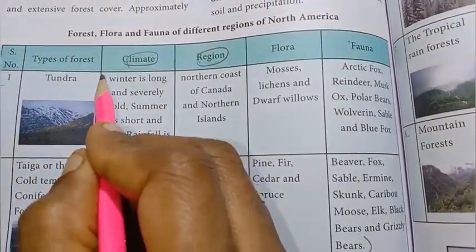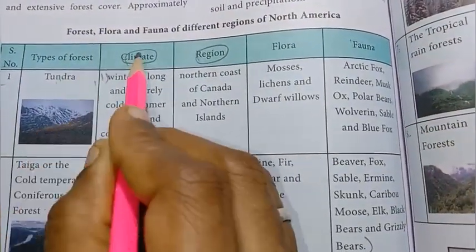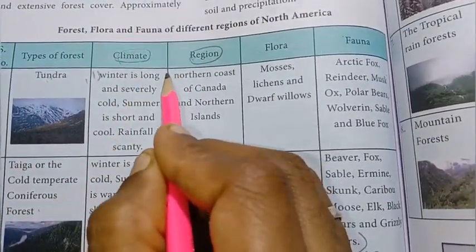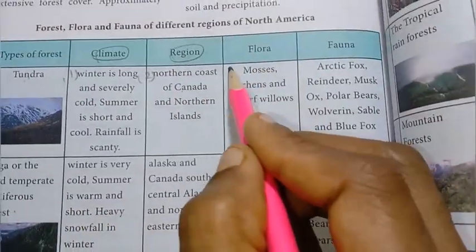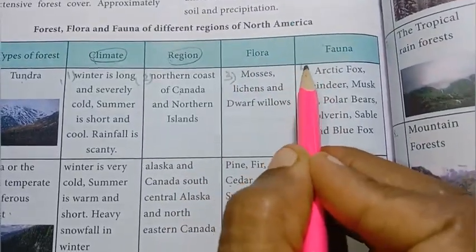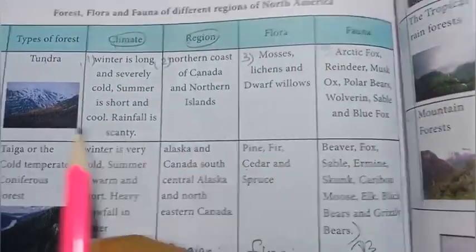For the Tundra and Taiga distinction: first point — Tundra climate. Second point — Tundra region. Third point — flora. Fourth point — fauna. Write the corresponding points for Taiga as well, and present any three points in the tabular column.